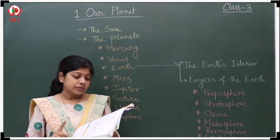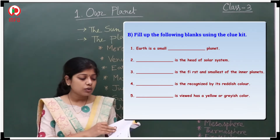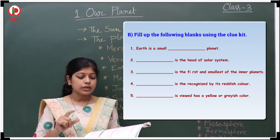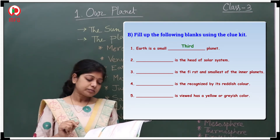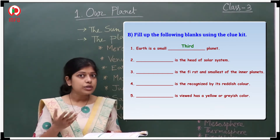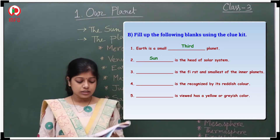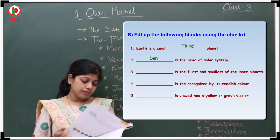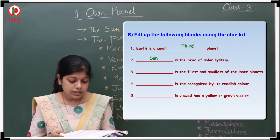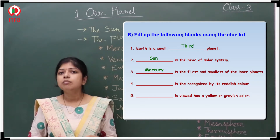Now for Section B: Fill in the blanks using the clue list. Earth is the third planet. The sun is the head of the solar system. Mercury is the first and smallest of the inner planets.